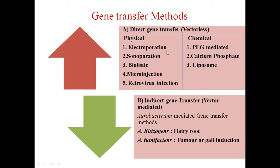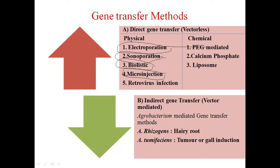Direct or vectorless gene transfer methods are divided into physical as well as chemical methods. In physical methods, there is electroporation using electric current, sonoporation where ultrasound is used, biolistic where DNA particles are coated with gold or tungsten, microinjection using a micropipette, and retroviral infection using retroviruses. In chemical methods, polyethylene glycol, calcium phosphate, and liposomes are used for transfer of gene.